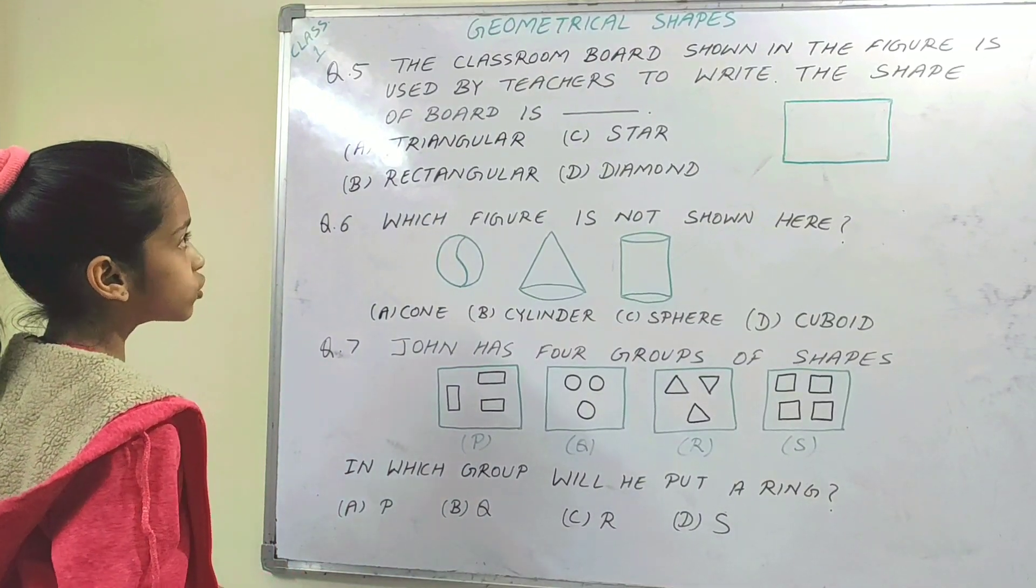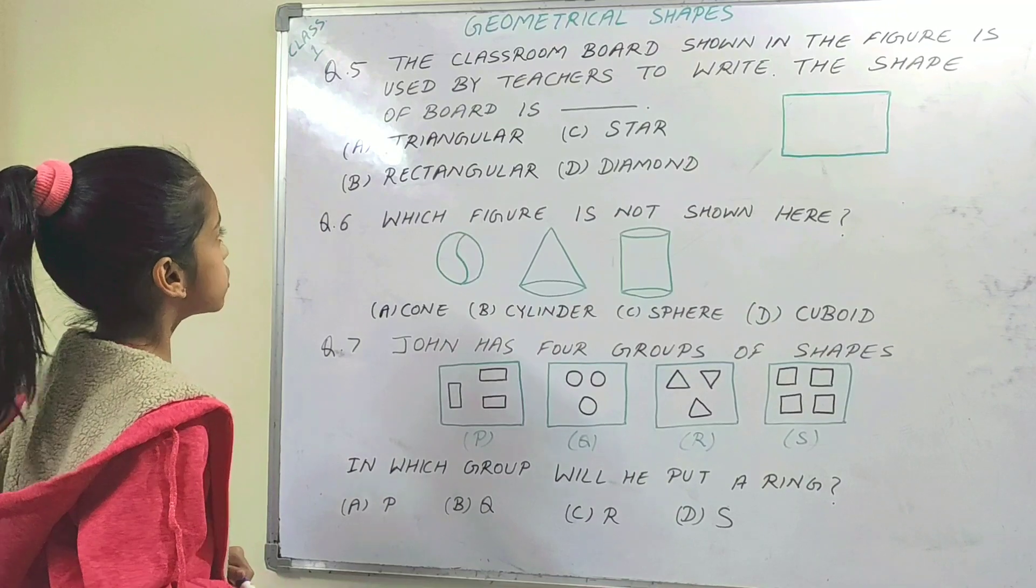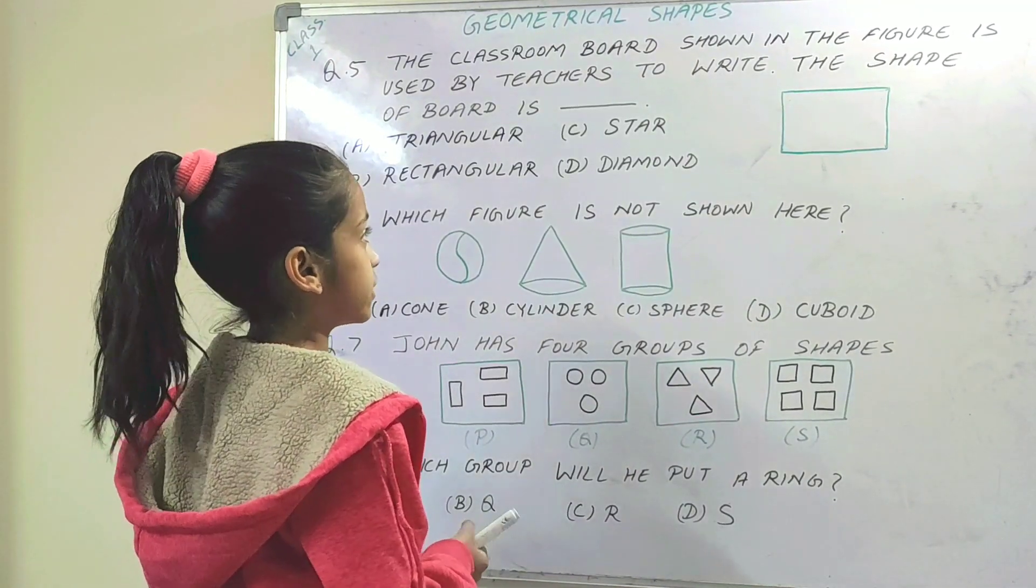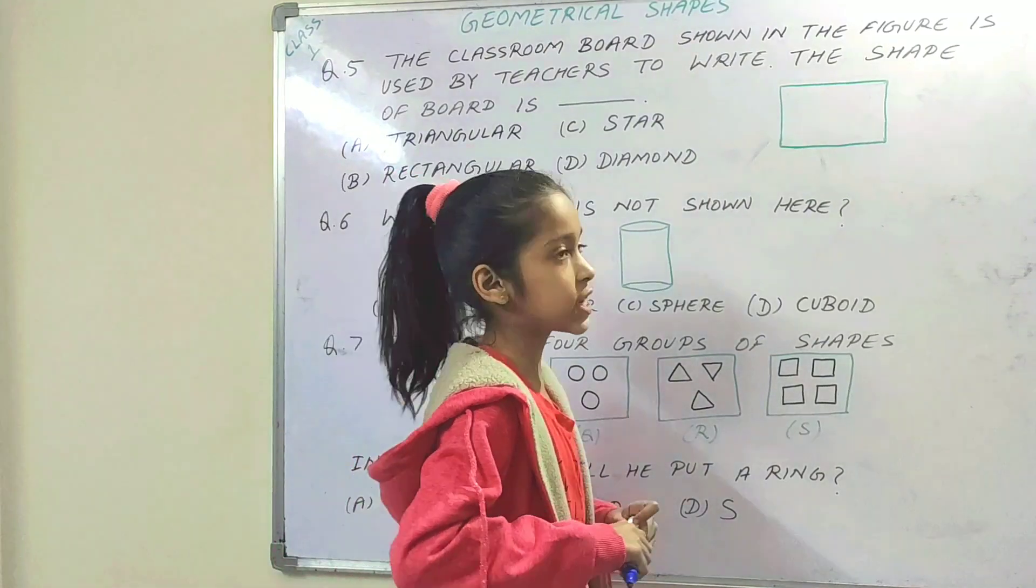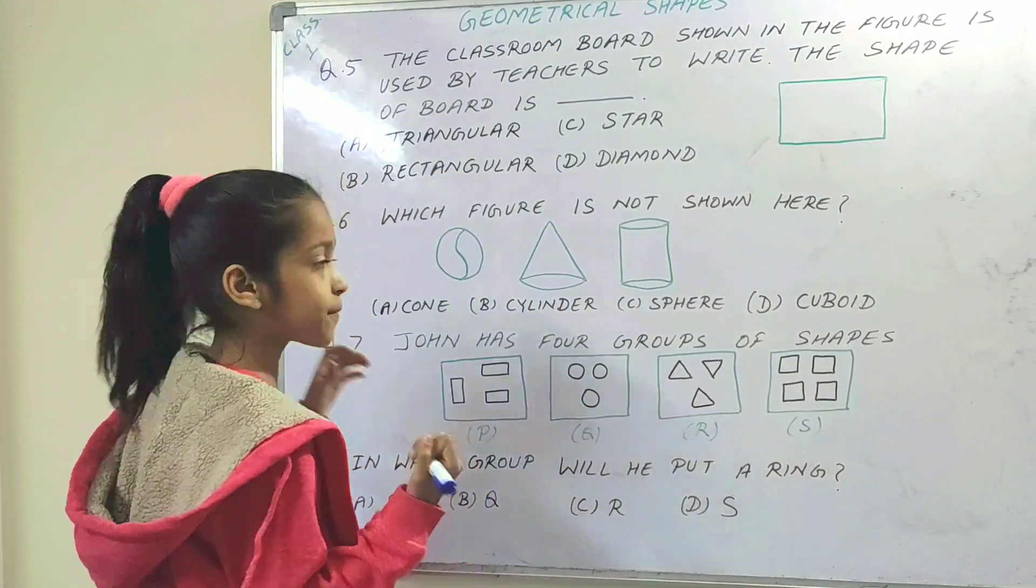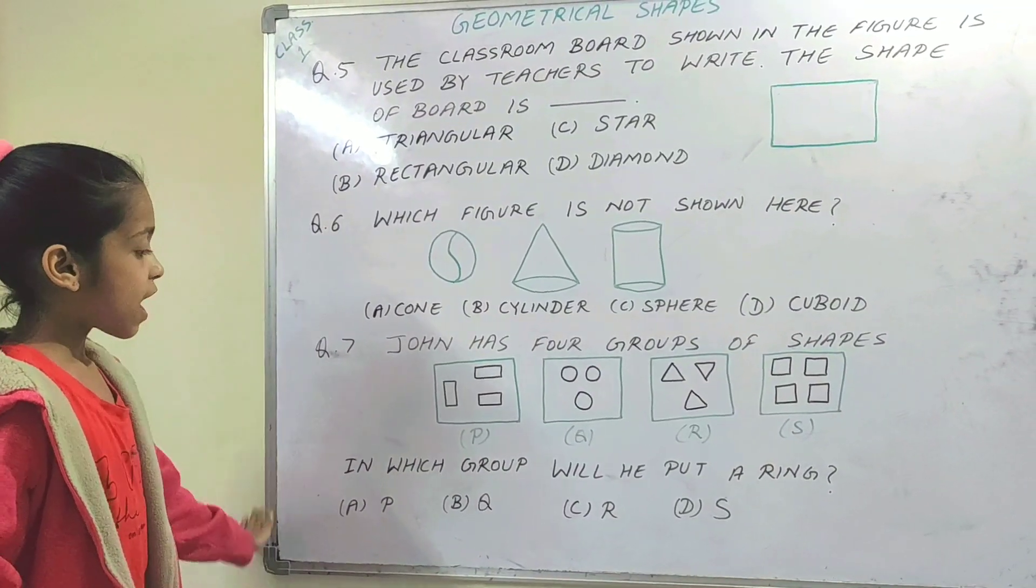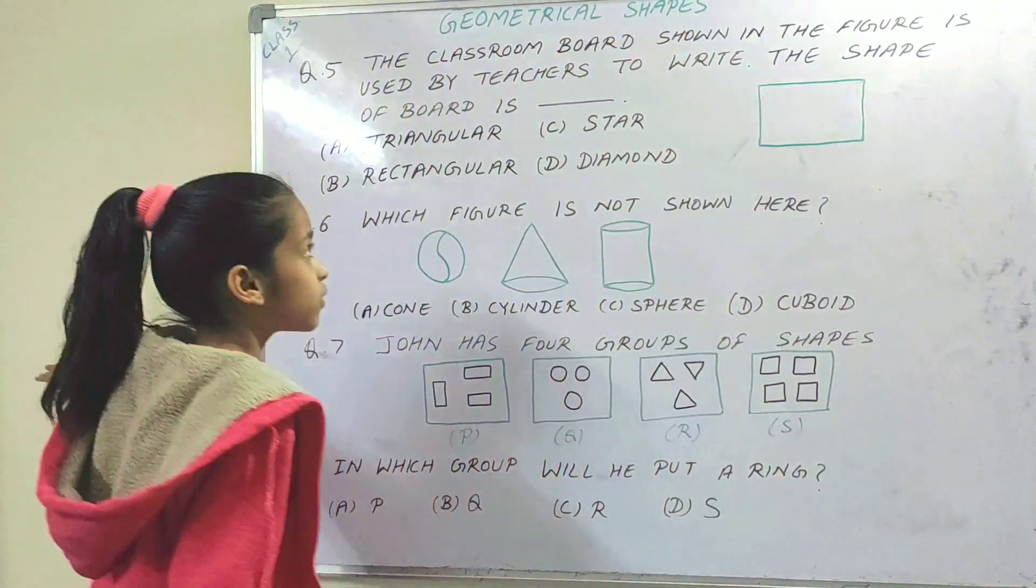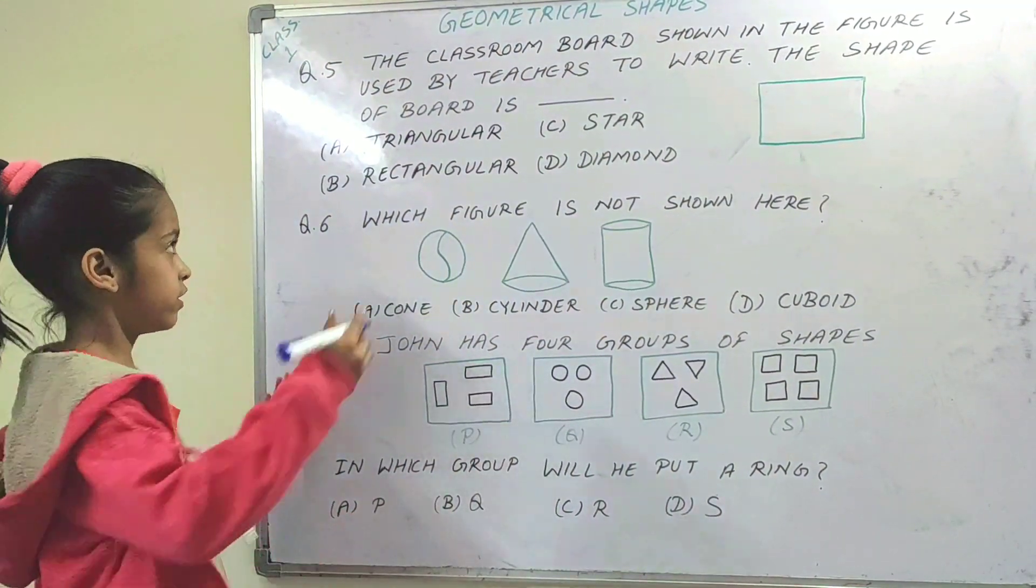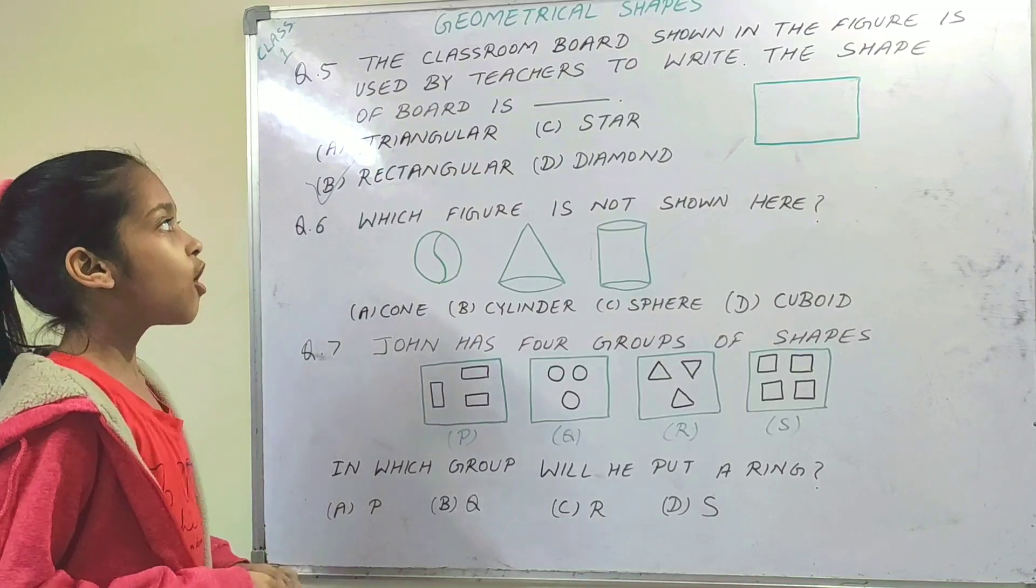Next question. The classroom board shown in the figure is used by teachers to write. The shape of the board is rectangular. So option B, rectangular, is the right option.